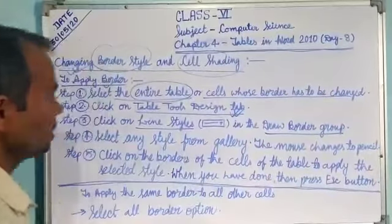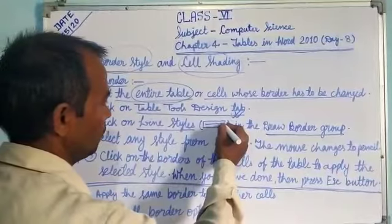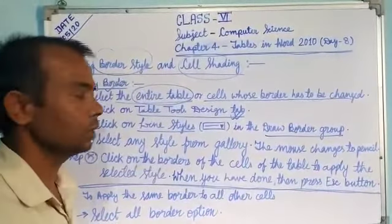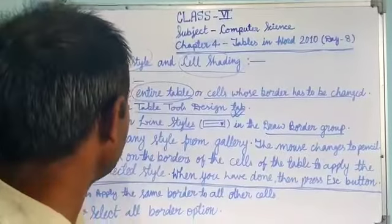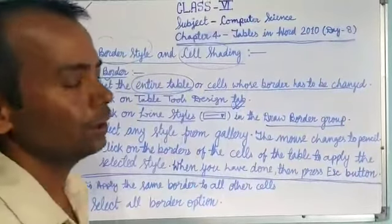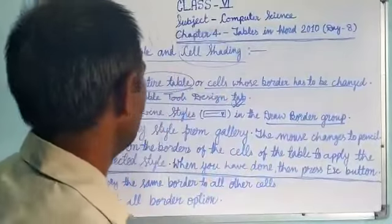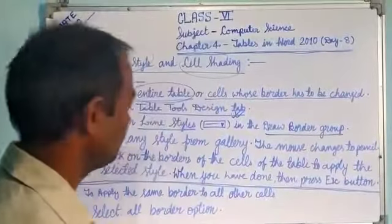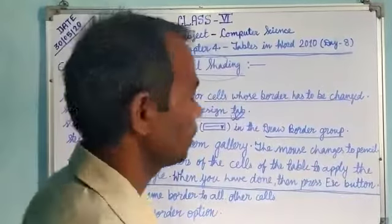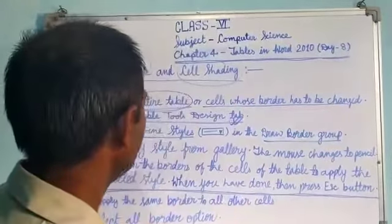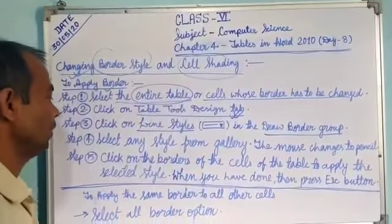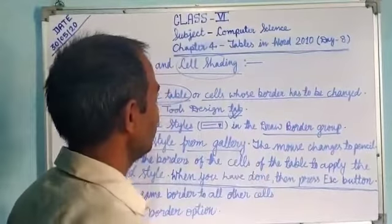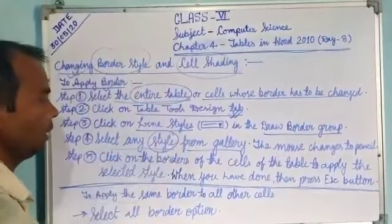One option is the line style option. There is a drop-down button here. Whenever you click this drop-down button, you can find many varieties of lines to choose from — solid lines, dash lines, very thick lines, thin lines, double lines. You can select whichever line you want from the style gallery.